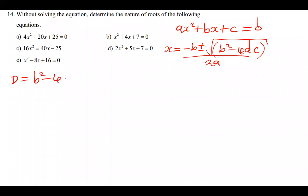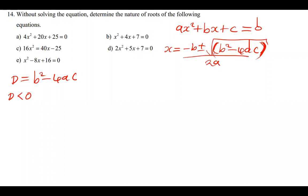If the discriminant is less than zero, it means the value of b²−4ac is a negative number. If you get a negative number under the root, the square root of any negative number gives us an imaginary number. So if D < 0, the type of roots that the quadratic equation will have are known as imaginary roots, or you can also call them complex roots.